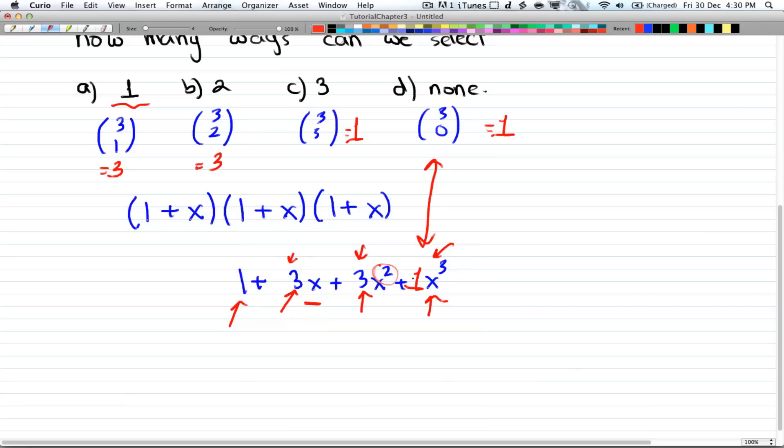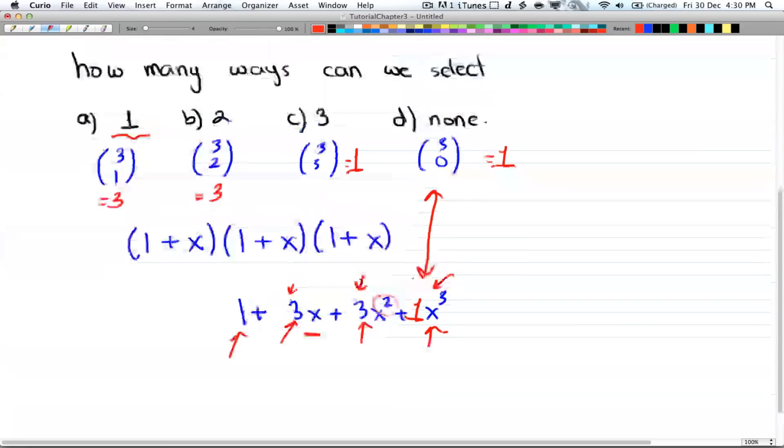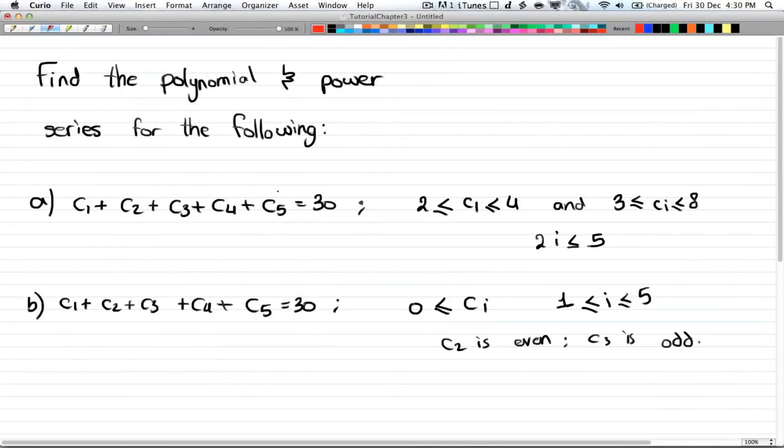And this is how we do it in the generative functions way. Okay, so here's an example of setting up the problem and understanding how they work. So if you have, find the polynomial and power series for the following. You can always find the polynomial, but you can't always find the power series.